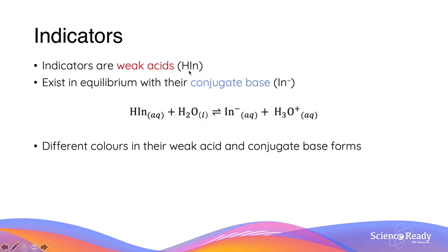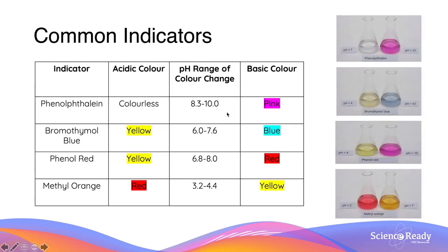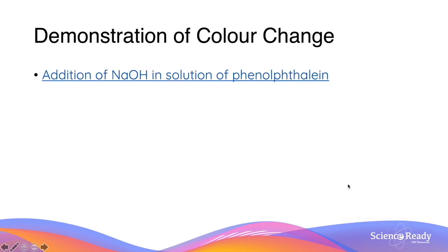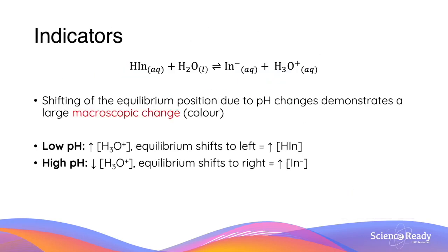Indicators are weak acids, which we denote with the notation HIn. They exist in equilibrium with their conjugate base, In⁻, and we can represent this as: HIn + H₂O ⇌ In⁻ + H₃O⁺. Different colours are seen in the weak acid and conjugate base forms, which is why we have a colour change with the change in pH. A shift in equilibrium position — which we recognise from Module 5 via Le Chatelier's principle — demonstrates large macroscopic changes, as we saw with nitrogen dioxide and dinitrogen tetroxide.